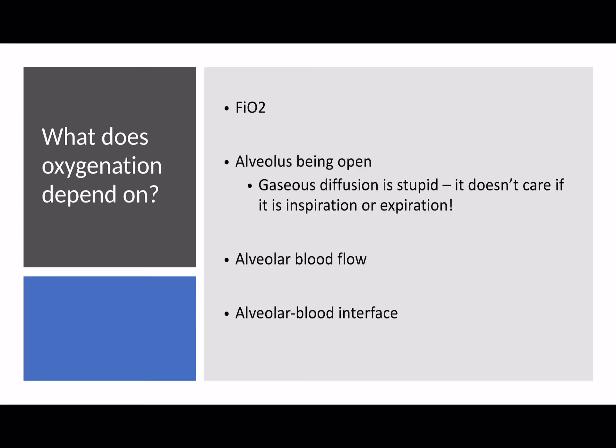Alveolar blood flow is really important and something people often forget when thinking about the hypoxic patient. There's no point in having an alveolus full of oxygen if there's no blood getting to it. This is why patients with pulmonary emboli become hypoxic — it's not that the alveolus is the problem, it's that there's no blood getting to the oxygenated alveolus. On a more macroscopic level, it's always worth thinking about right ventricular function. If you don't have a good cardiac output from the right heart pumping blood into the ventilated lung, you're not going to get adequate oxygenation.